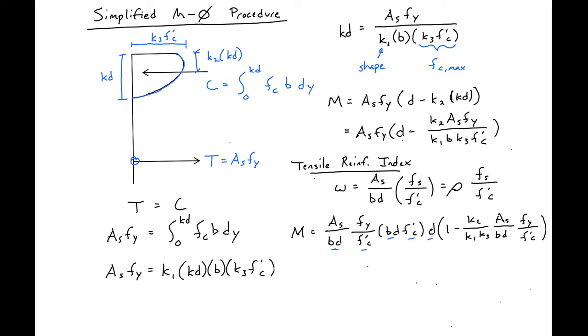We can rewrite this in terms of our omega: M equals omega Bd squared times F'c times 1 minus K2 over K1 times K3 times omega. Now we have a general expression for our moment based on several constants that we can experimentally derive.